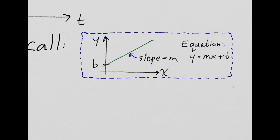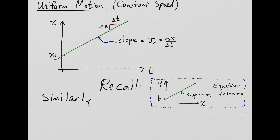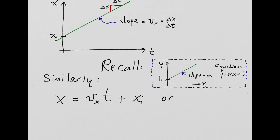Recall that for a plot of y versus x with slope m and y-intercept b, the equation is y equals mx plus b. Similarly, for this case, x at some time t equals the slope v sub x times t plus the y-intercept x sub i. Another way of writing that is: x equals x initial plus v sub x times t.